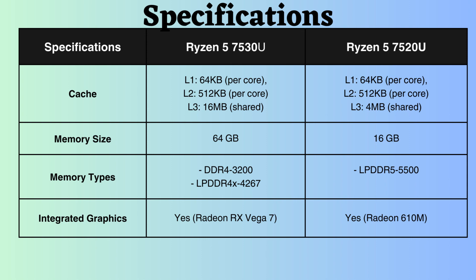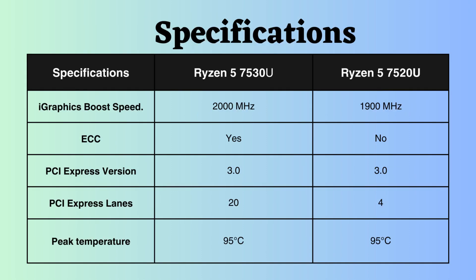Both of these processors support integrated graphics, and the boost frequency of the integrated graphics for the Ryzen 7530U is slightly greater than that of the Ryzen 7520U, suggesting that the Ryzen 7530U might excel in graphical tasks. The Ryzen 7530U supports ECC, while the Ryzen 7520U does not, making the Ryzen 7530U a suitable choice for critical systems.